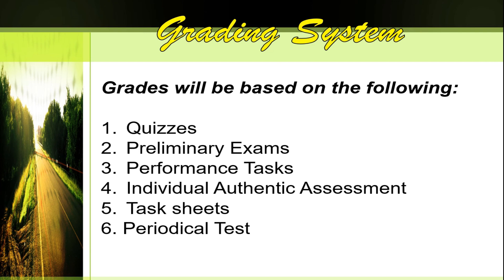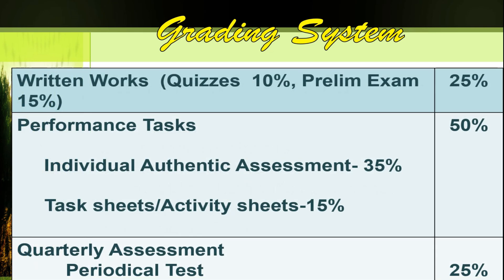For the grading system, you will be graded based on the following. First is quizzes, followed by preliminary examination, third is performance task which is divided into two — individual authentic assessment and your task sheets — and lastly your periodical test. Earth and life science is a core subject. For written work: quizzes 10%, preliminary exam 15%, for a total of 25%. Performance task: individual authentic assessment 35%, task sheets or activity sheets 15%, for a total of 50%. And for your quarterly or periodical test, it is 25%, for a grand total of 100%.